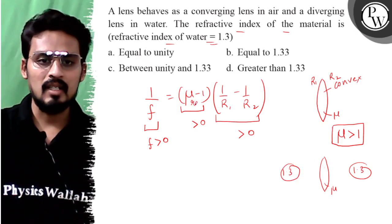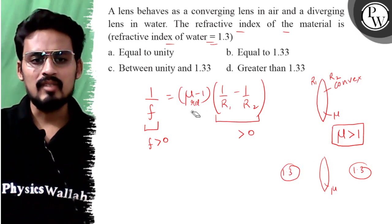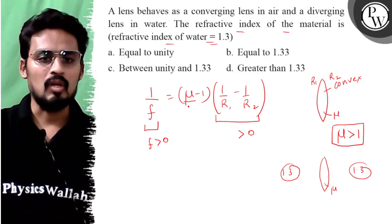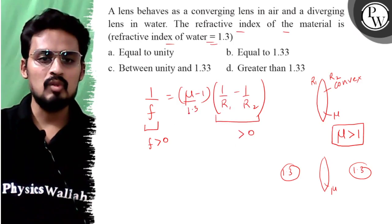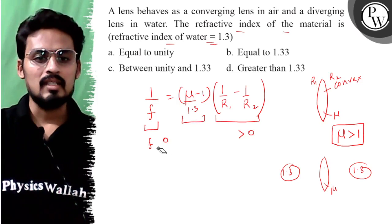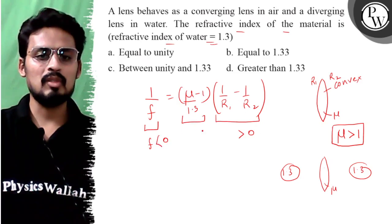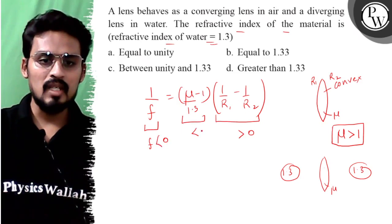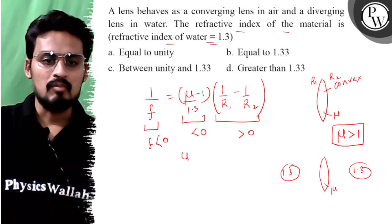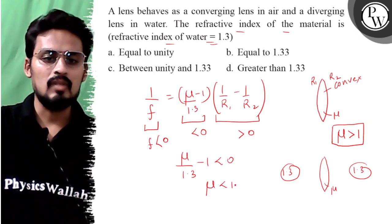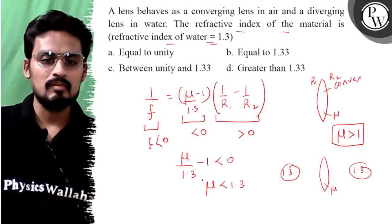In this formula, a relative term will come in. This relative term is μ_lens / μ_surrounding, i.e., μ of glass upon 1.3. But this time the value is negative and focal length is negative. The term (μ/1.3 - 1) must be negative, which means μ must be less than 1.3.